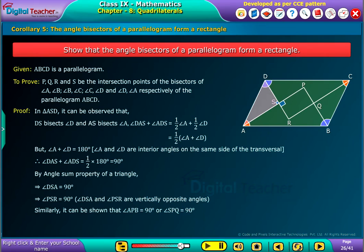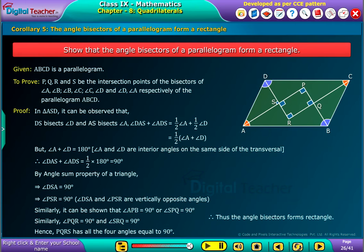Similarly, it can be shown that angle APB equal to 90 degrees or angle SPQ equal to 90 degrees. Similarly, angle PQR equal to 90 degrees and angle SRQ equal to 90 degrees. Hence, PQRS has all the four angles equal to 90 degrees. Therefore, thus the angle bisectors form a rectangle.